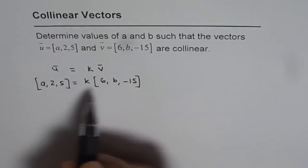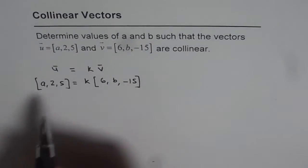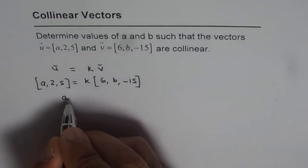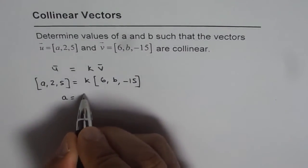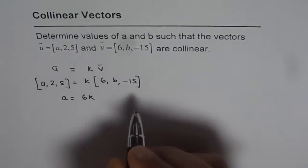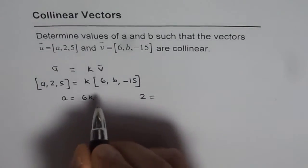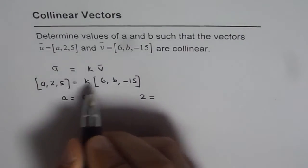So from here we get three different equations. First equation is a equals 6k. Second is 2 equals bk.